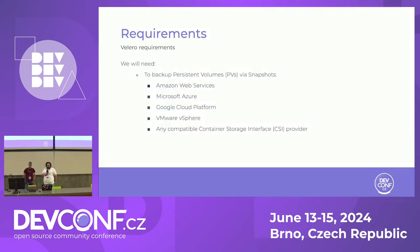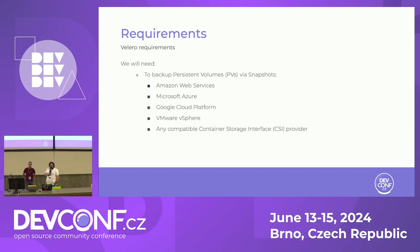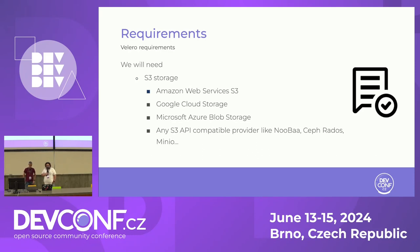Velero uses object storage to store backups and associated artifacts. It also integrates with supported block storage systems to snapshot your persistent volumes. Before beginning the installation process, you should identify the object storage provider and optional block storage provider you'll be using. Velero allows you to take snapshots of persistent volumes as part of your backups. Velero also has RESTIC and Kopia integration to give you an out-of-the-box solution for backing up and restoring almost any type of Kubernetes volume. This integration is in addition to Velero's existing capabilities, not a replacement for them.